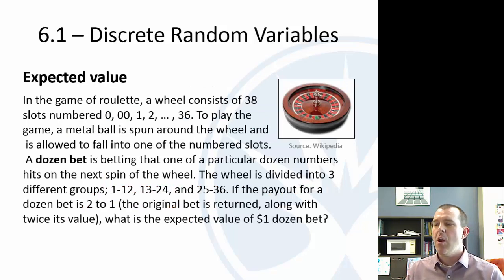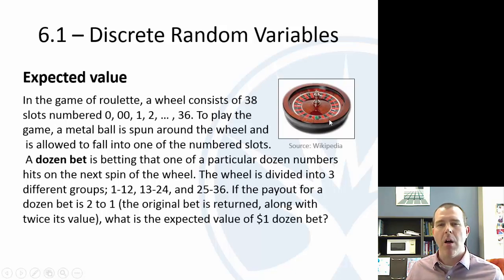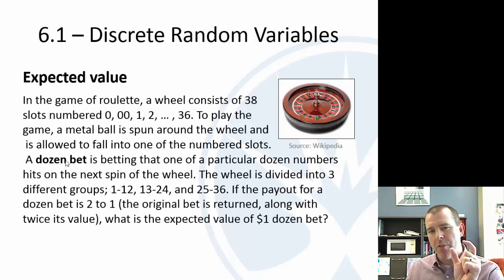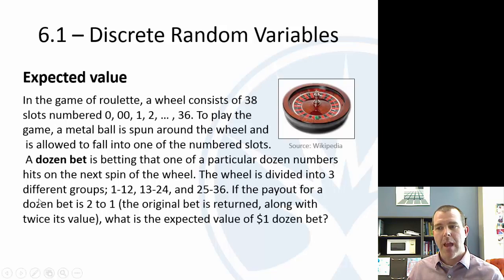We're going to look at a couple of examples here — you'll need to do the homework for more practice. We're going to start with the game of roulette, looking at expected value, which is the mean. In roulette, you have a wheel that spins and a ball falls on one particular spot. In American roulette, there are 38 slots: zero, double zero, and then one through 36. One particular bet is called a dozen bet, where you bet on a set like 1 through 12 or 13 through 24.